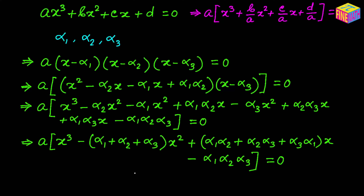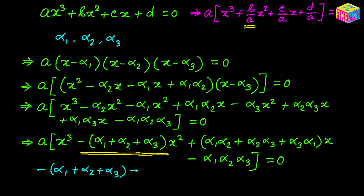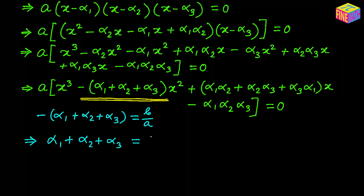So now our cubic equation looks like this and we are going to compare the two forms to see how the coefficients match up. Looking at the coefficient of x squared, in the first form we have positive b over a, but in the second form we have negative sum of the three roots. So comparing them, we can say that alpha sub 1 plus alpha sub 2 plus alpha sub 3 equals negative b over a.